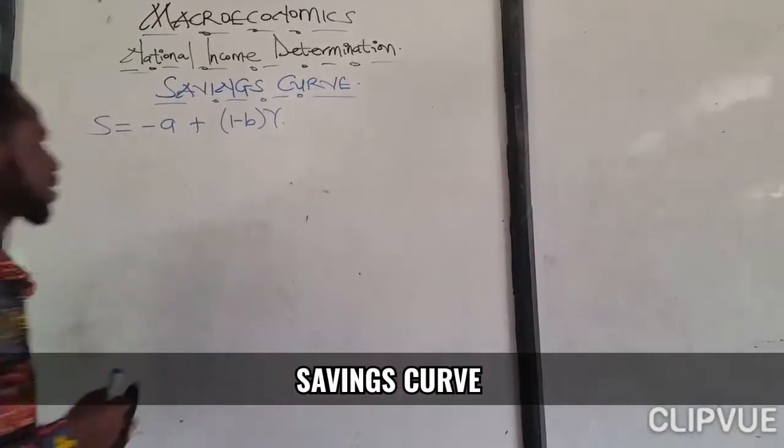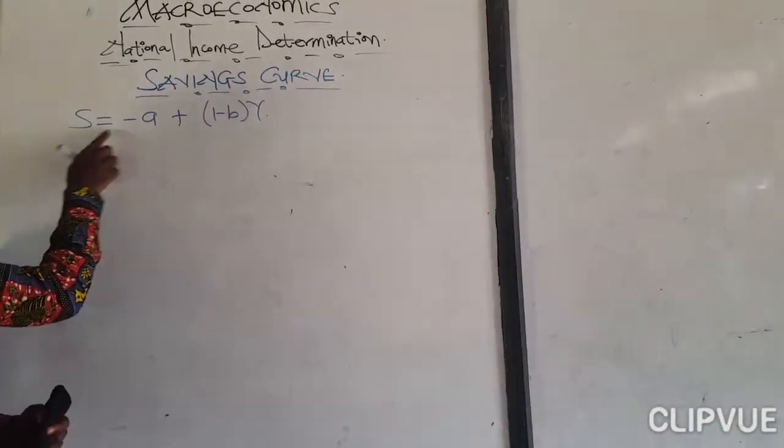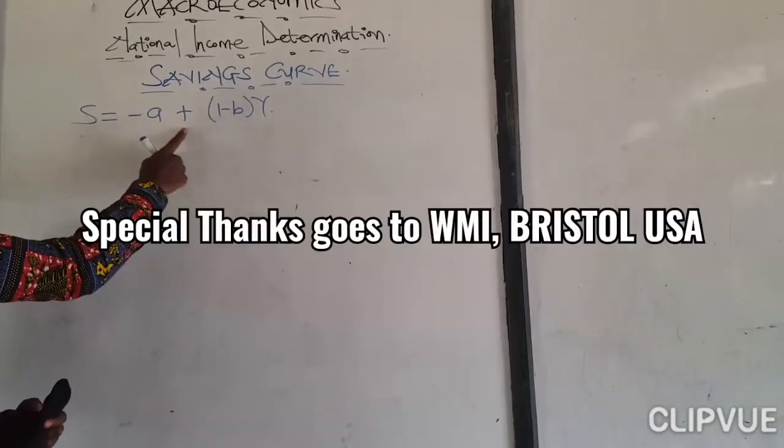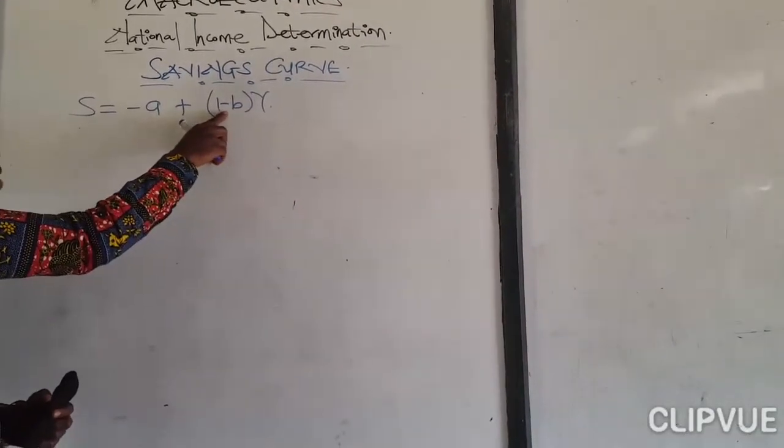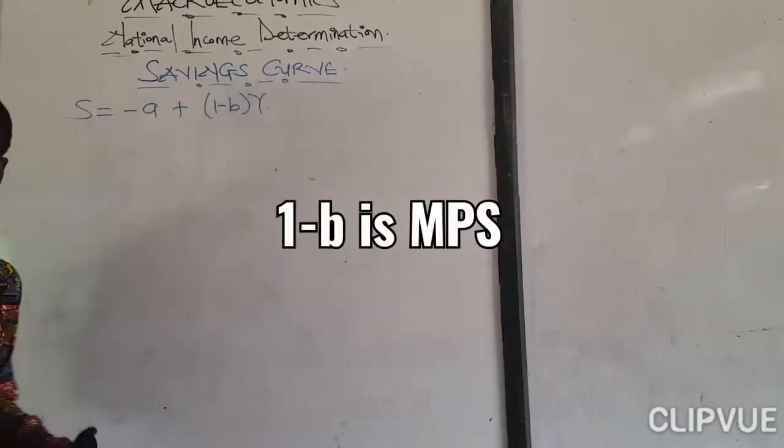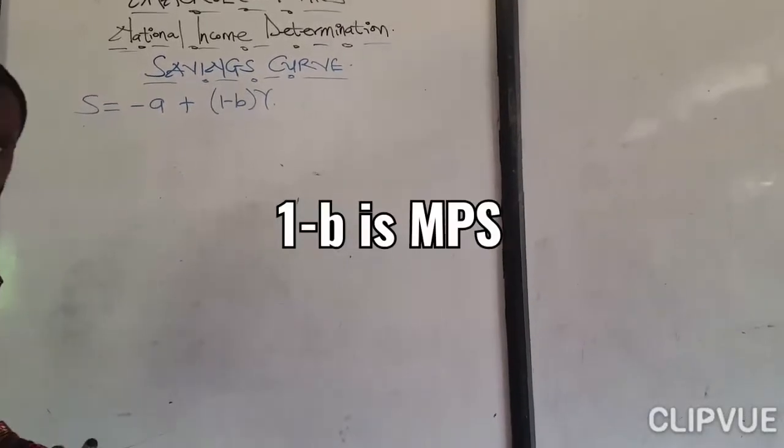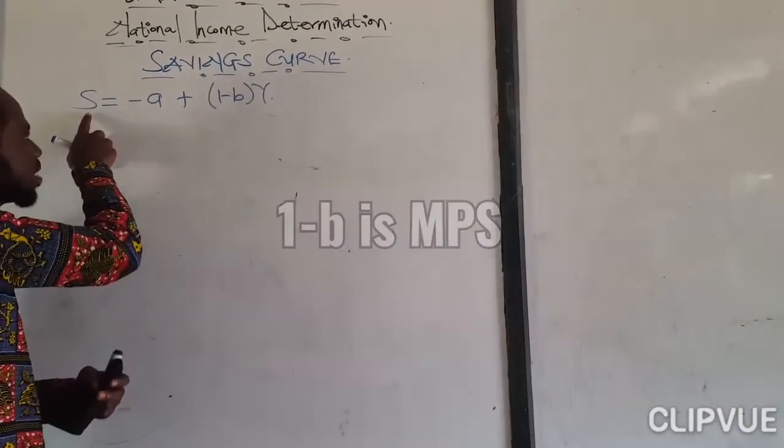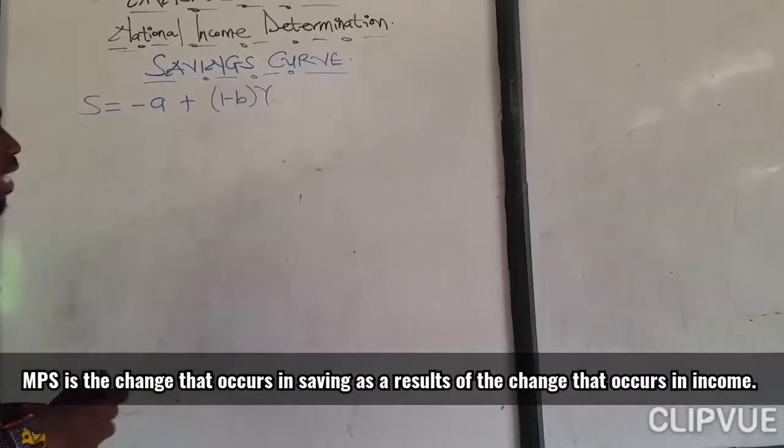Now we have seen that the savings function is equal to S equals minus a plus (1-b)Y. And the (1-b) represents the marginal propensity to save, the change that occurs in savings when income changes.